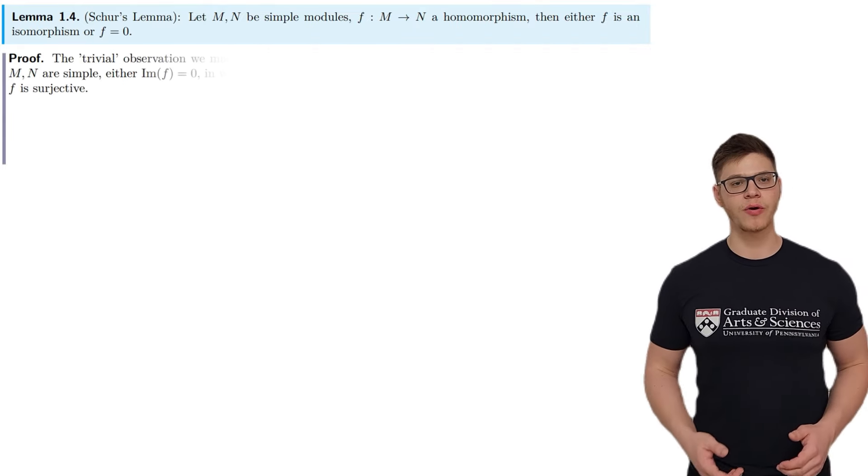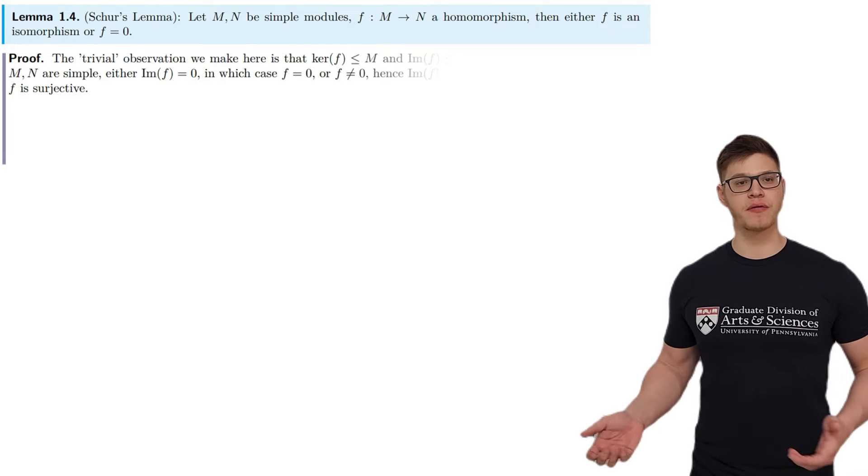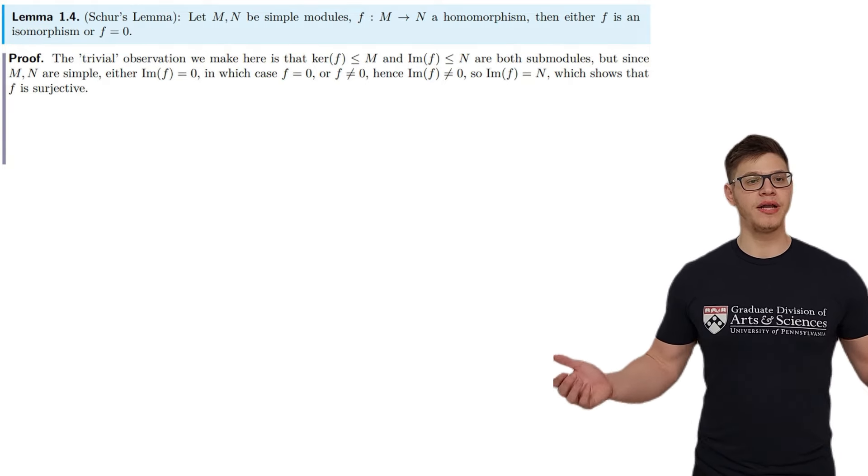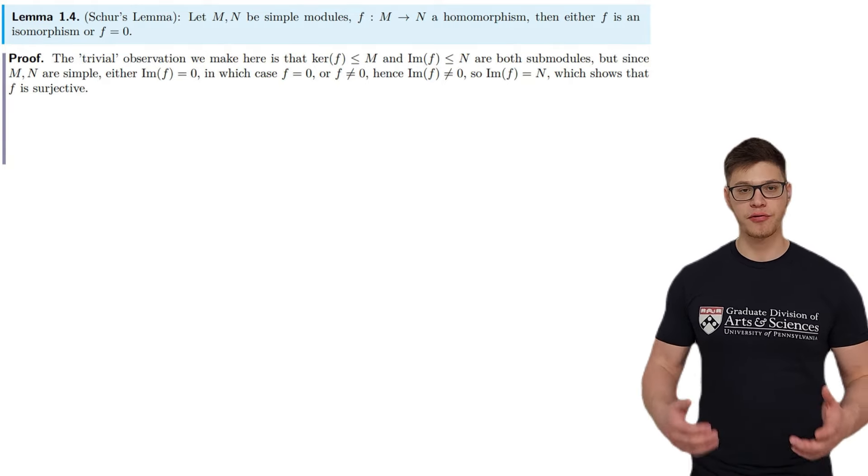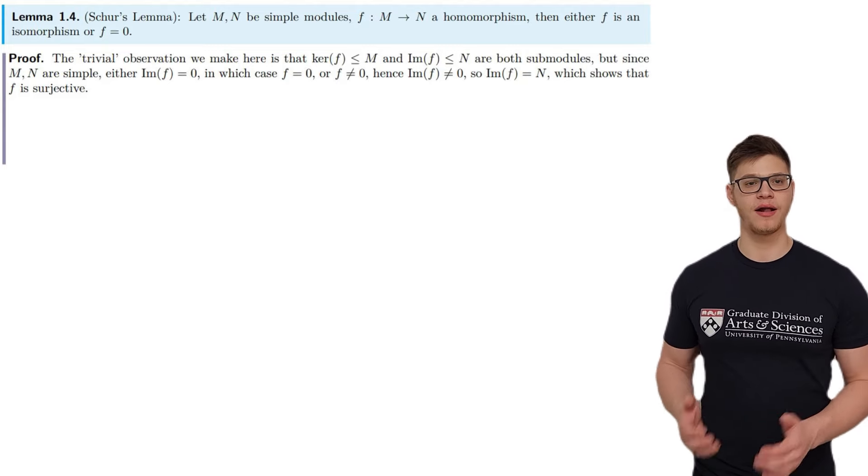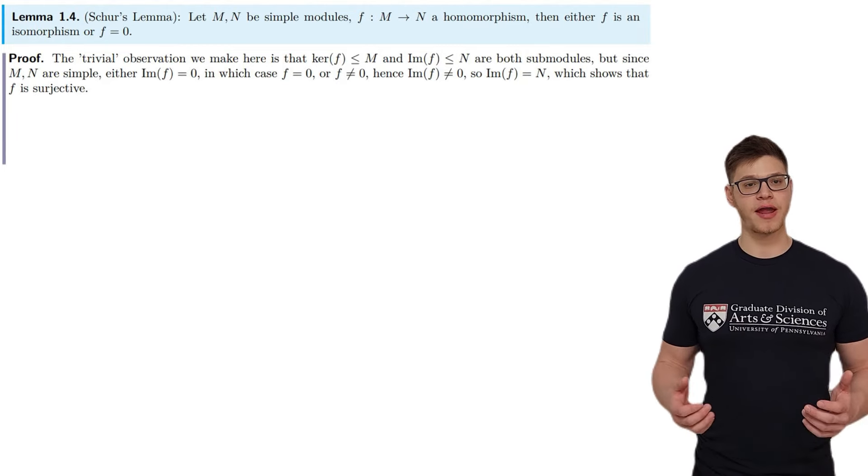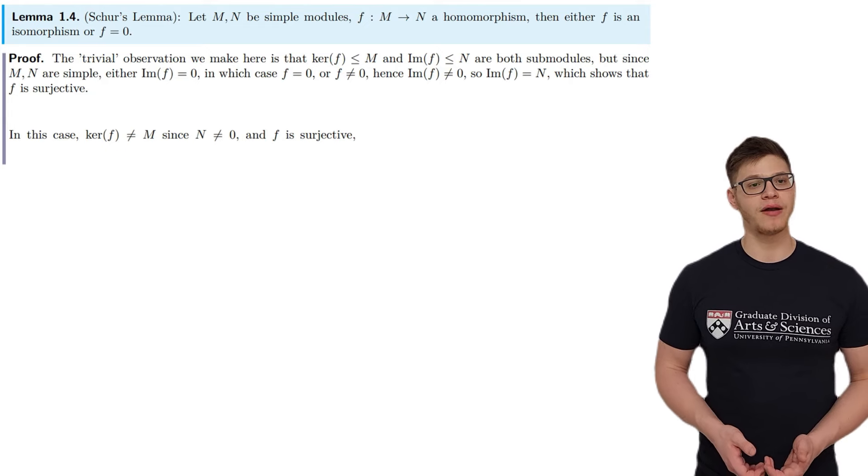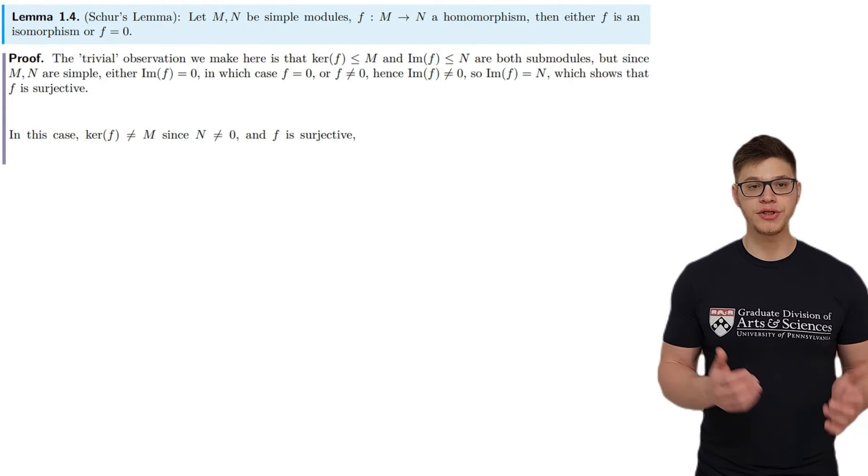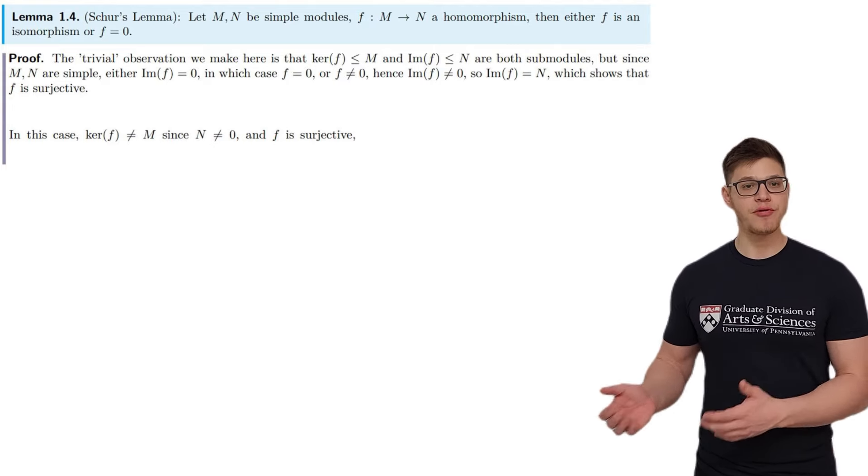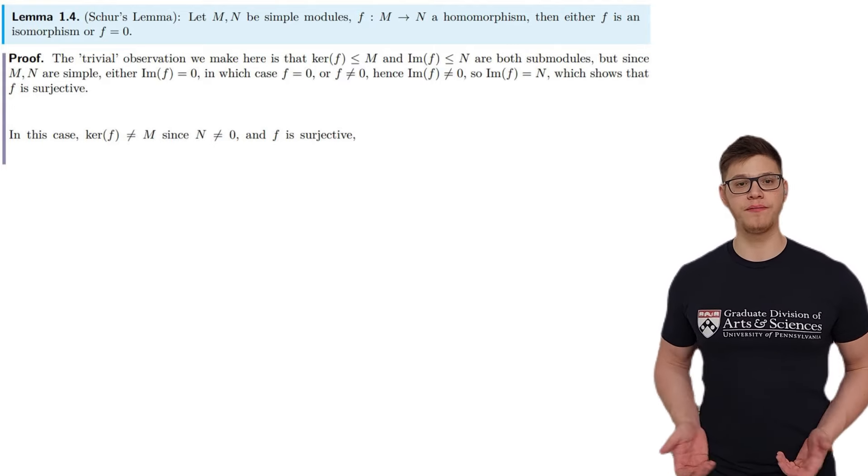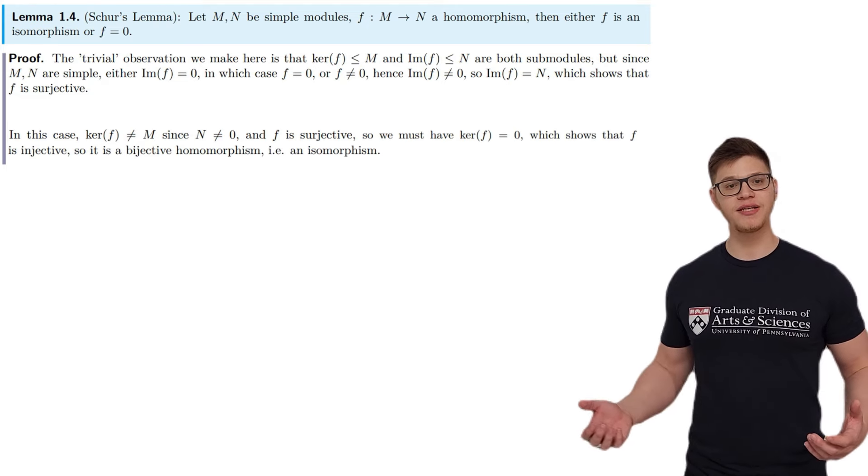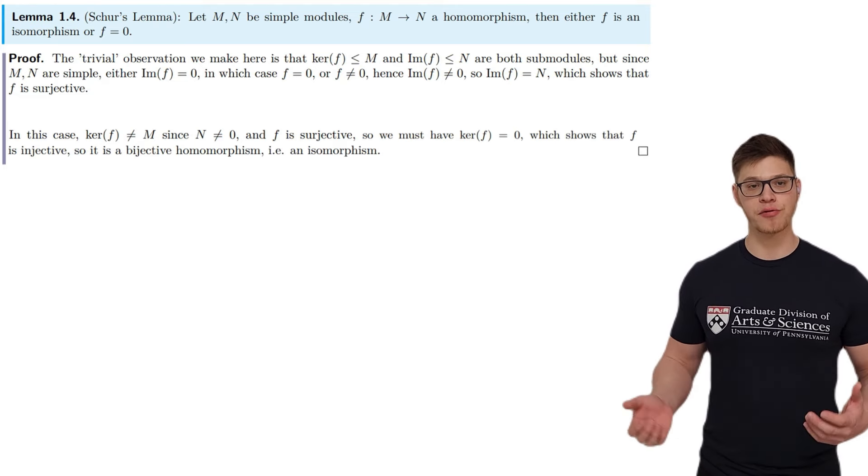As for the proof, the trivial observation here is that the kernel of f is a submodule of M, and the image of f is a submodule of N. But since M and N are simple, either the image of f is zero, i.e., f is the zero homomorphism, or it is equal to N, i.e., f is surjective. In this case, the kernel of f cannot be equal to the entire module M, because that would imply that the image of f is zero. But we just saw that f is surjective, and N is non-zero, so the image of f cannot be zero. So we get that the kernel of f has to be zero. So f is also injective, so it is bijective, and hence an isomorphism.